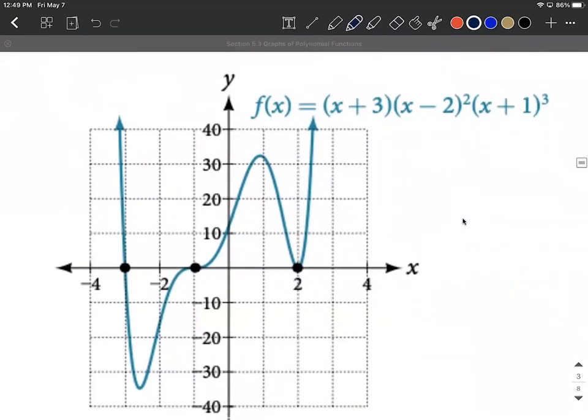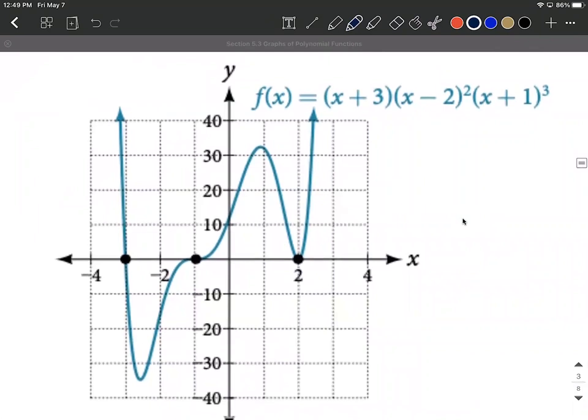So here's the graph of the exact same polynomial function. You'll notice we had negative 3, positive 2, and negative 1 as being our zeros. And sure enough, we crossed, and we crossed here, but this was that multiplicity of 1 compared to a multiplicity of 3. You'll notice that with the higher multiplicity, this is going to kind of hug closer to the x-axis as we go across the x-axis. This is much more vertical with a multiplicity of 1.